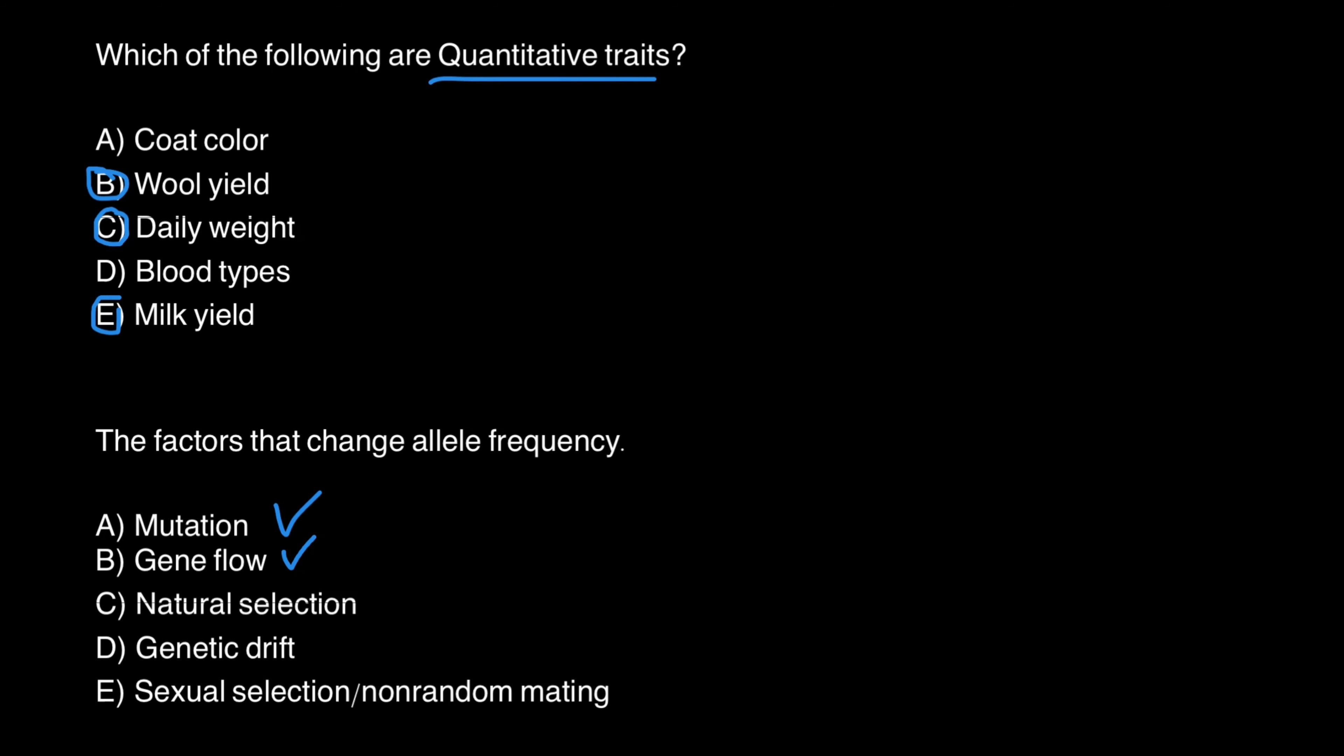Natural selection also leads to change in allelic frequency, because some genotypes would have better fitness than the other. So some alleles would disappear from this group of animals or population, and some alleles we can find in higher frequency.